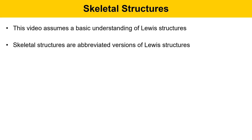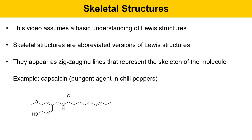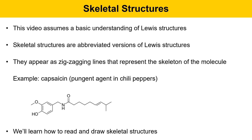Skeletal structures are abbreviated versions of Lewis structures. They appear as zigzagging lines that represent the skeleton of the molecule. Here's an example: capsaicin, the active agent, the pungent molecule that's present in chili peppers. This molecule is written in skeletal structure form, and there are a number of carbon atoms and hydrogen atoms that aren't indicated. In this video, we're going to learn how to read this structure, interpret it, convert it to a Lewis structure, and also take Lewis structures and convert them into skeletal structures.